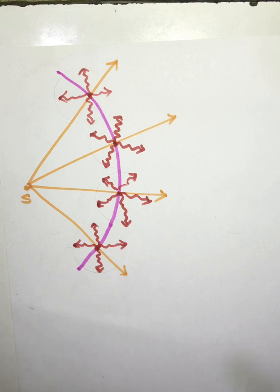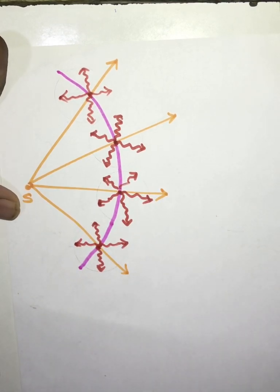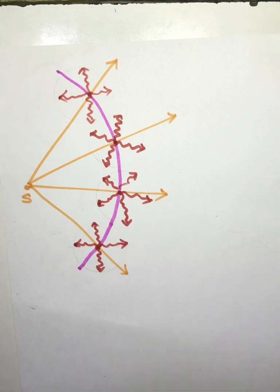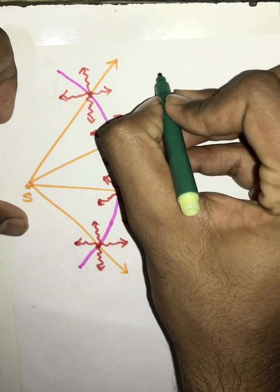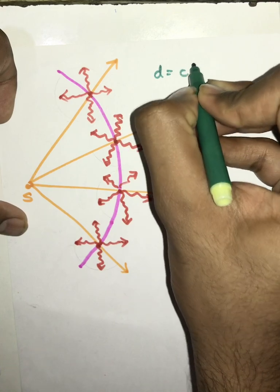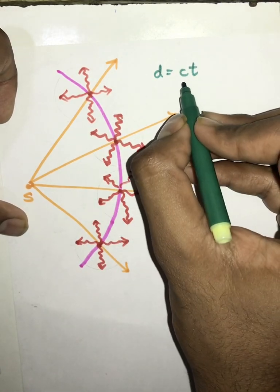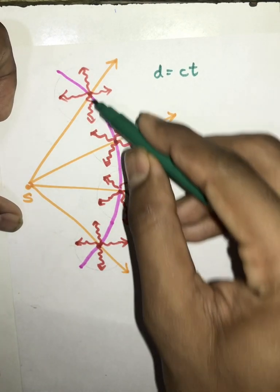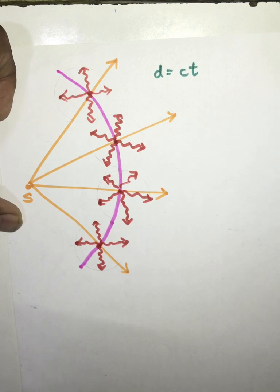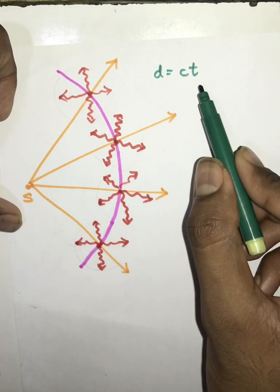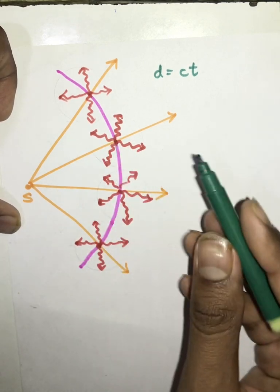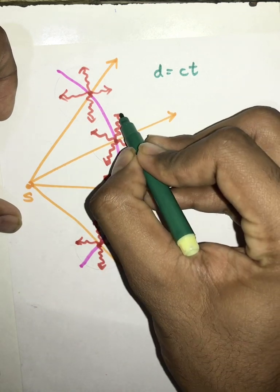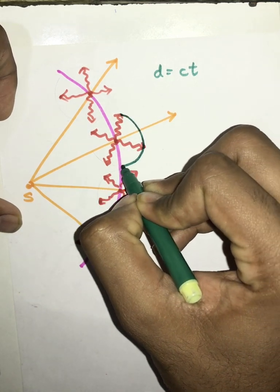Now these points on the wavefront will act as secondary sources of light and will emit light in all possible directions. If you observe, the distance travelled by each wave D is equal to speed into time. The speed is C, the speed of light, and all these red colour waves are travelling at the speed of light. Since speed and time are the same for all of them, the distance travelled will be equidistant from the centre source of light. Now if we join these points together we get a circle.